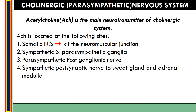The cholinergic nervous system is also known as the parasympathetic nervous system, and in this nervous system acetylcholine is the main neurotransmitter. There are four sites where acetylcholine gets released: first, the somatic nervous system at the neuromuscular junction; second, sympathetic and parasympathetic ganglia; third, parasympathetic postganglionic nerve; and fourth, sympathetic post-synaptic nerve to sweat gland and adrenal medulla.